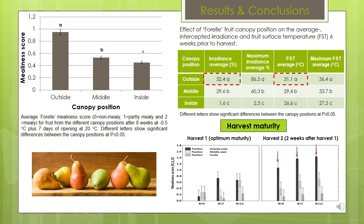The harvest maturity figure demonstrates the mealiness score of fruit from different canopy positions at harvest 1 and harvest 2. It is clear that fruit harvested 2 weeks after optimum maturity, especially outer canopy fruit, was significantly mealier than fruit harvested at optimum maturity.